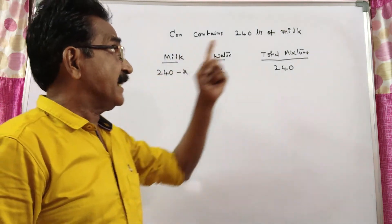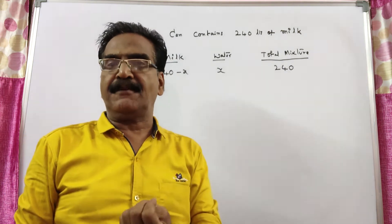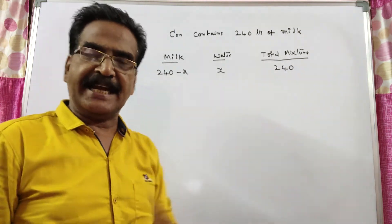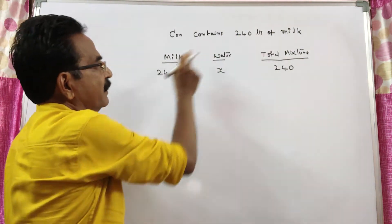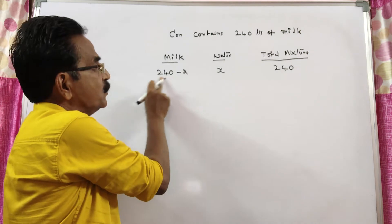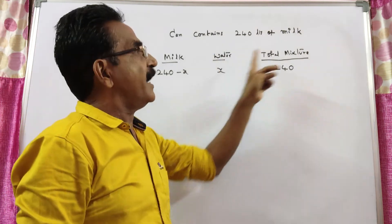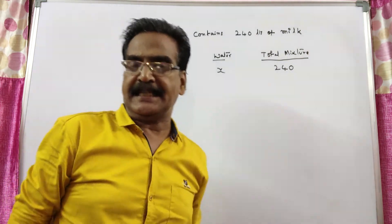See friends, a can contain 240 liters of milk and x liters of milk is drawn out and equal quantity of water is added. So x liters of milk is drawn out, then the remaining milk is 240 minus x and x liters of water is added. Again, the total mixture comes to 240 minus x plus x, that is equal to 240 liters.